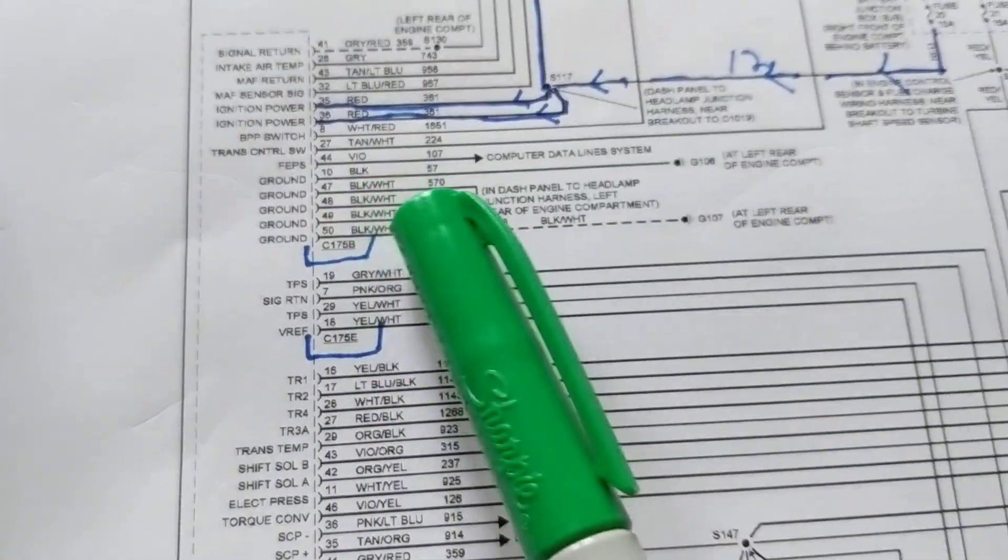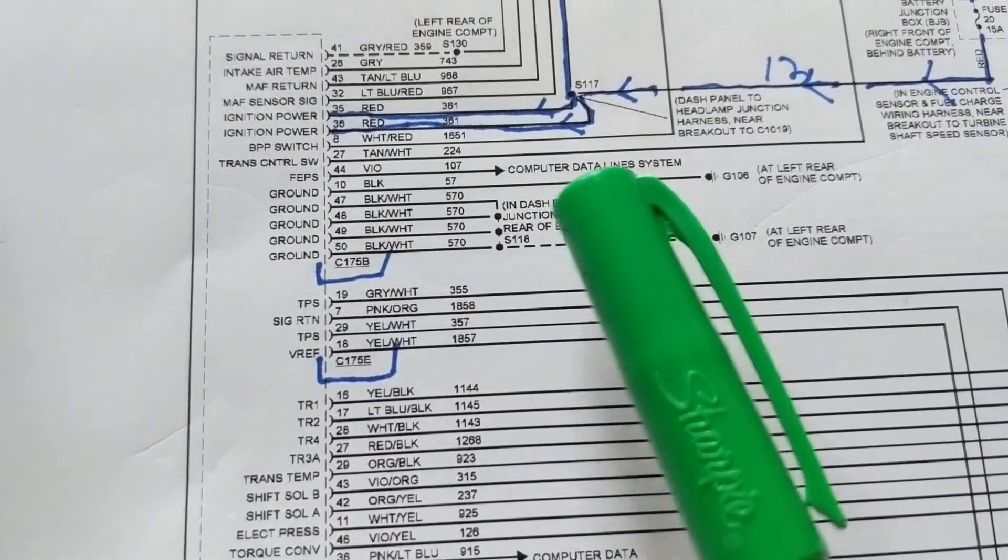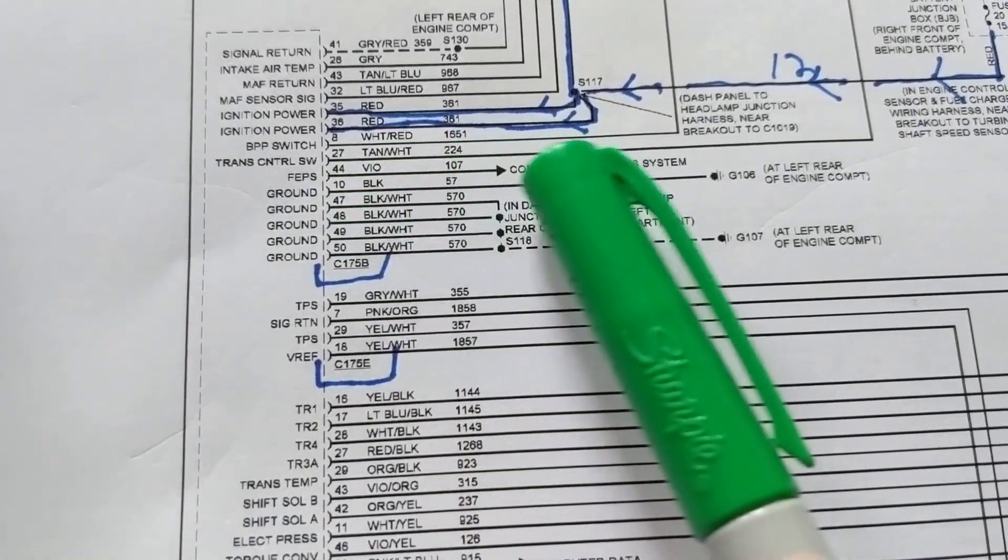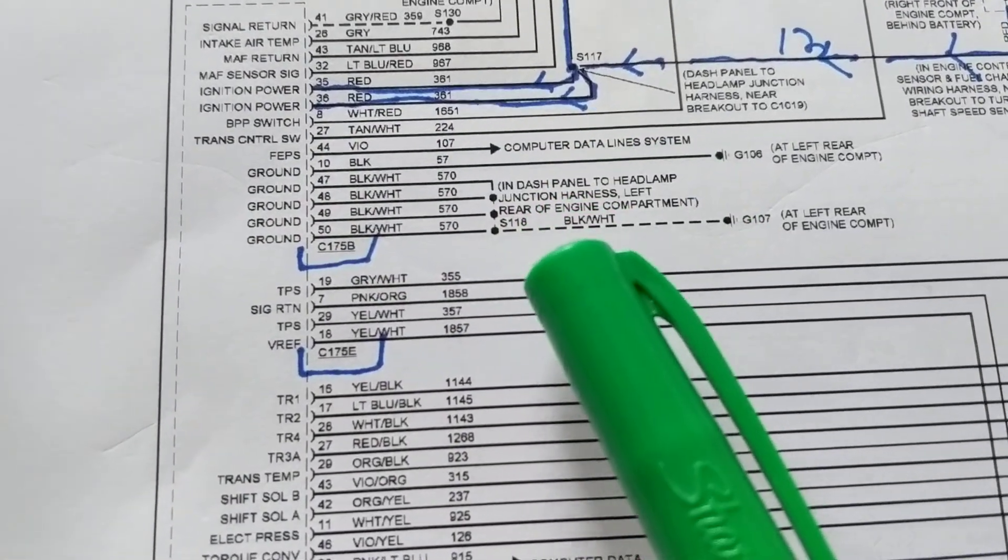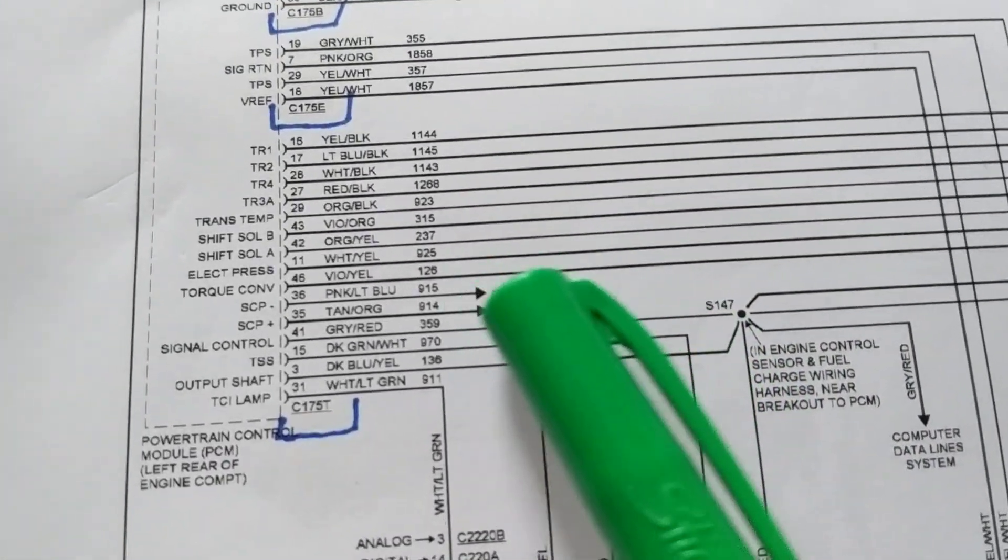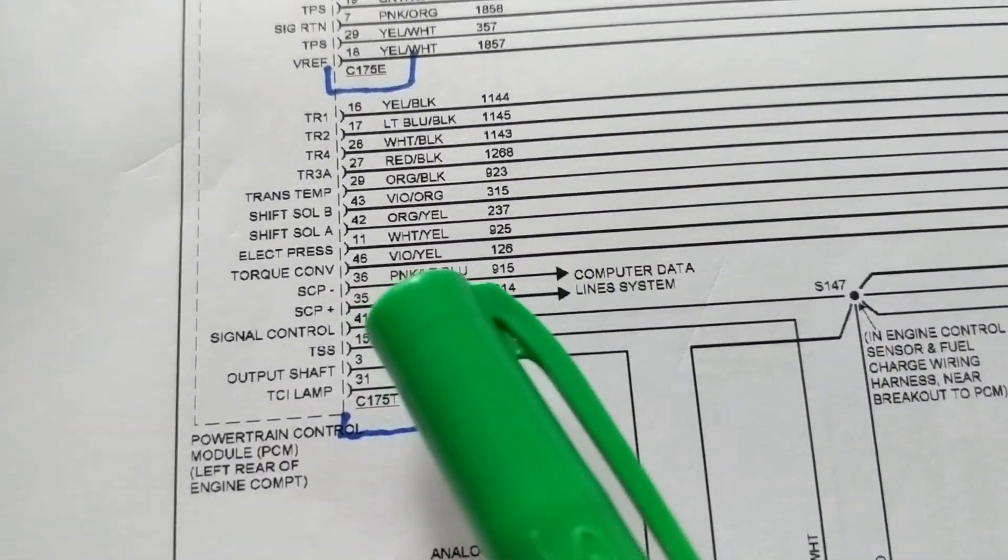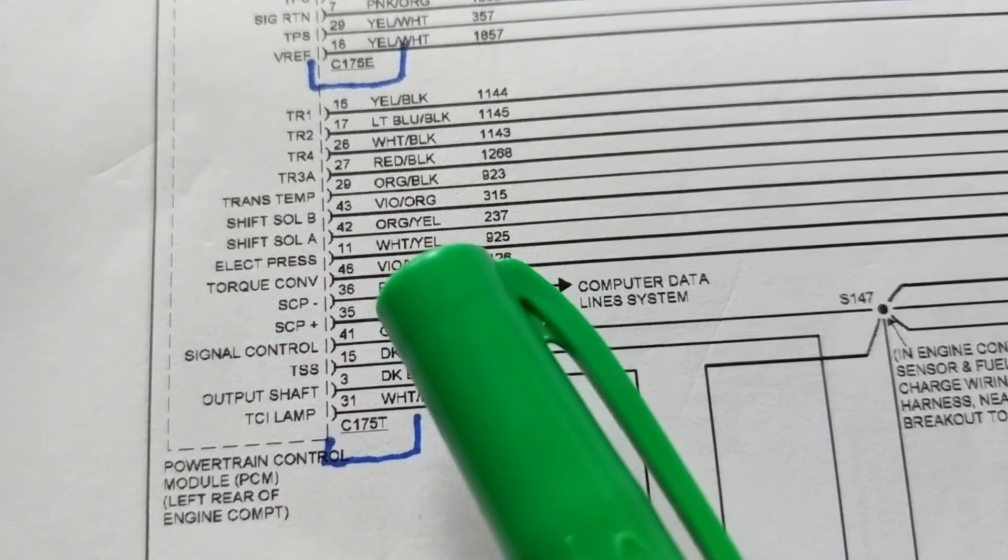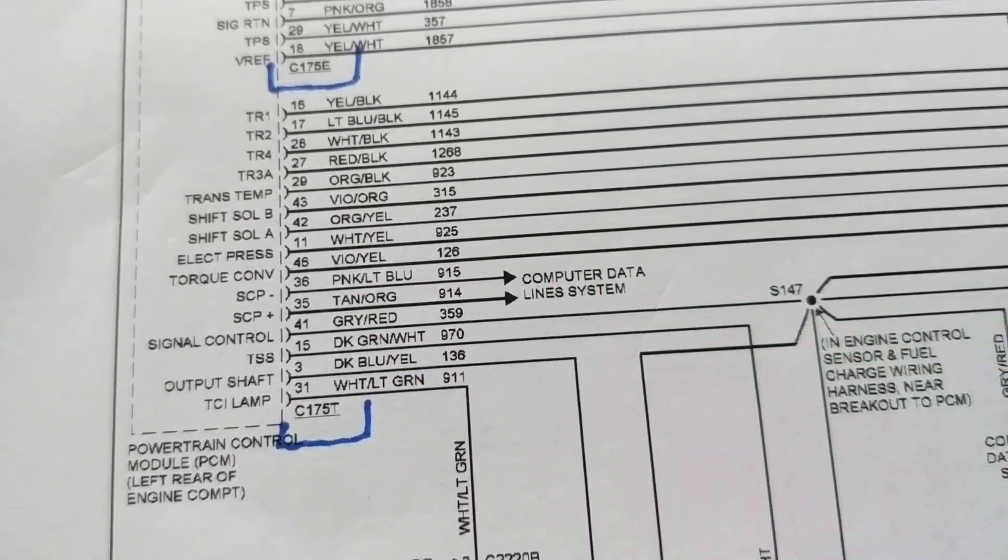the PCM goes to different systems. When there's an arrow, that means it goes to a system. As you see over here, see the arrow? Pin 36 and 35 goes to the computer for communication.